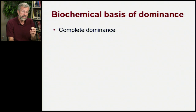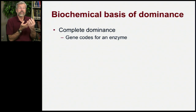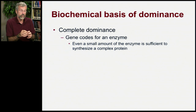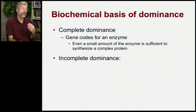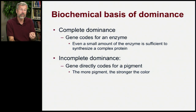The details are probably too much for an introductory course, so let me simplify by saying that in the cases of complete dominance, those likely reflect genes that code for proteins called enzymes. Enzymes facilitate reactions in the manufacture of other compounds, and so even a small amount of the enzyme would be sufficient to serve the role as a catalyst to synthesize a more complex protein. On the other hand, with incomplete dominance, genes often code directly for pigments. Pigments can be proteins, and so the more pigment, the stronger the color.